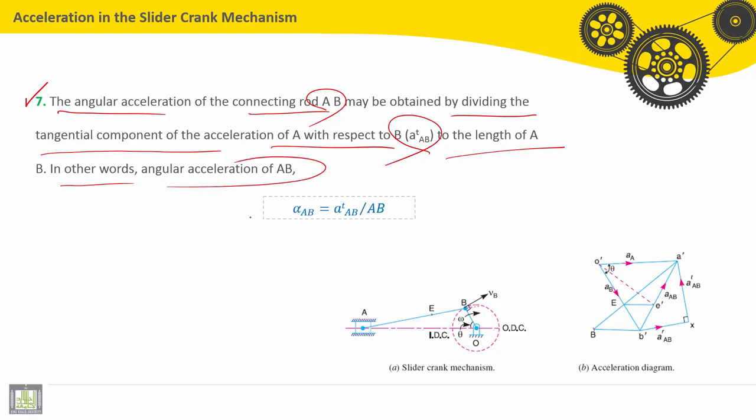Finally, in step seven, the angular acceleration of the connecting rod A-B may be obtained by dividing the tangential component of the acceleration of A with respect to B (A-T-A-B) by the length of A-B. In other words, angular acceleration Alpha A-B equals A-T-A-B divided by the length of A-B.